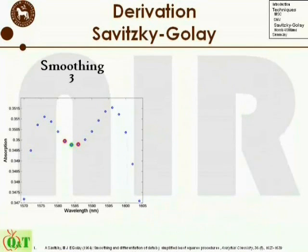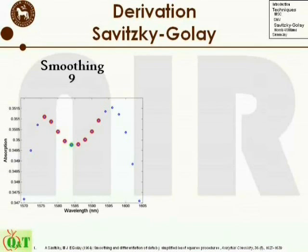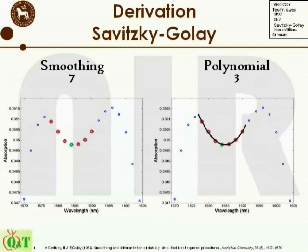There are three parameters which should be decided in the Savitzky-Golay routine: the degree of derivative sought for, the number of points used in the smoothing, and the polynomial order of the smoothing function. It is important to be aware that as the degree of derivation increases, the signal-to-noise ratio decreases. This is especially the case if few points are used in the smoothing and/or a high polynomial order for the smoothing function.